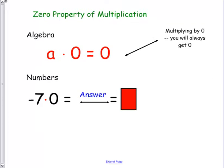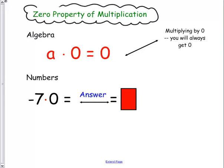Let's look at the zero property. This is a new one. The zero property only works with multiplication because what we're saying here is every number times 0 is 0. So negative 7 times 0 is 0.